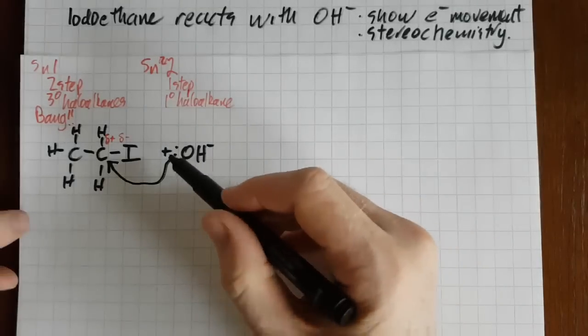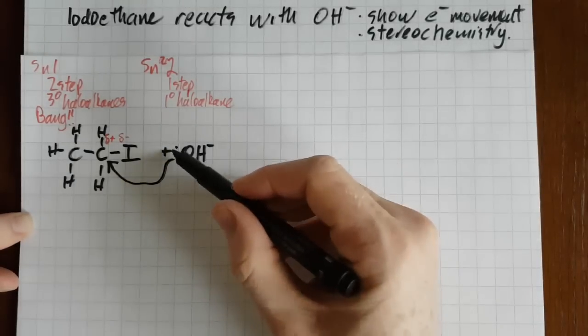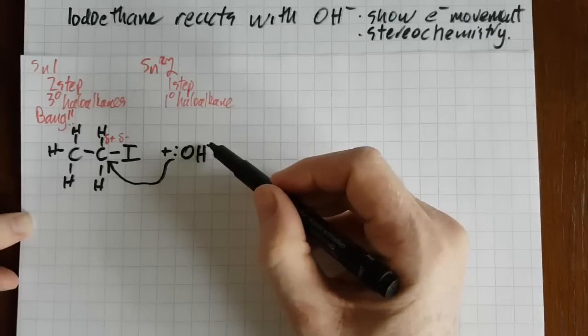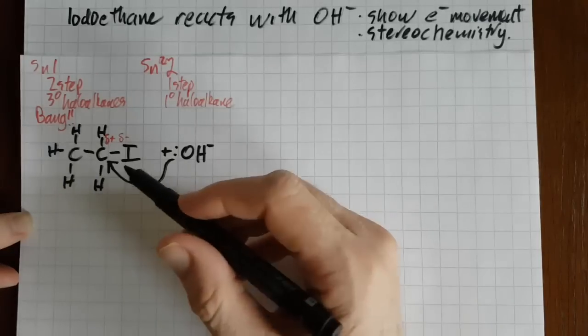If you draw the arrow coming from anywhere other than the double electron there, the electron pair there, or the negative sign, you'll lose a point. And if it doesn't go to the carbon, you'll also lose a point.